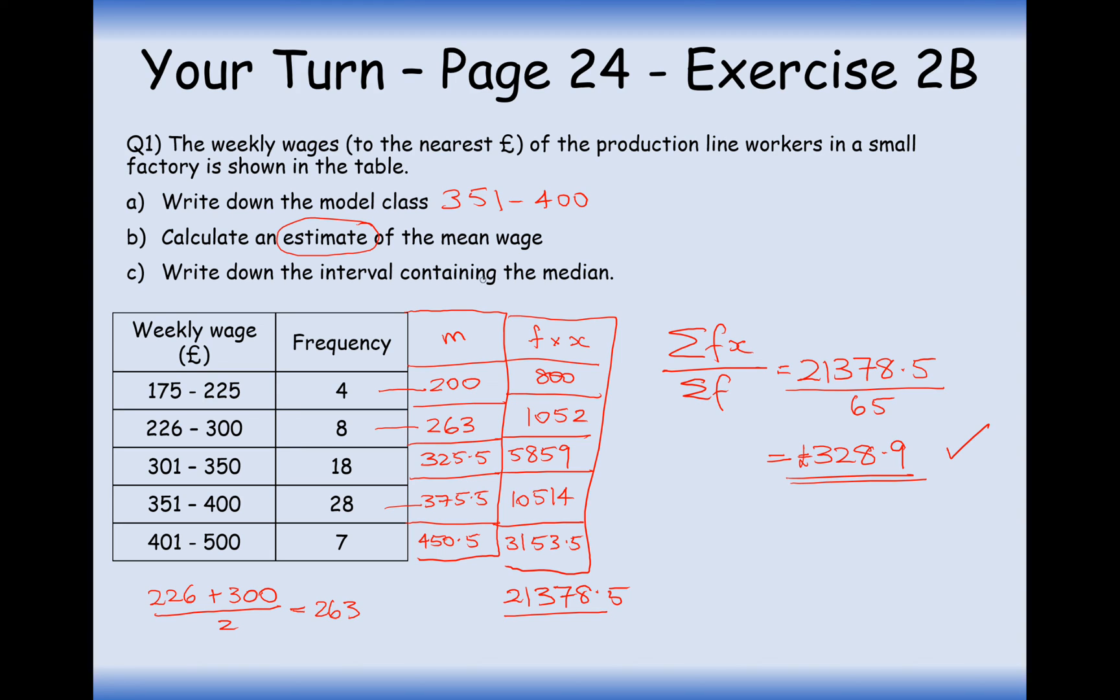Part C here, write down the interval containing the median. Well, what we do here is if we've got 65 pieces of data, then we use the little formula of n plus 1 divided by 2. n is how many pieces of data we have. So it's 65 plus 1 divided by 2. So that's 66 divided by 2 is 33. So it's the 33rd piece of data, and now we have to go through the groups.